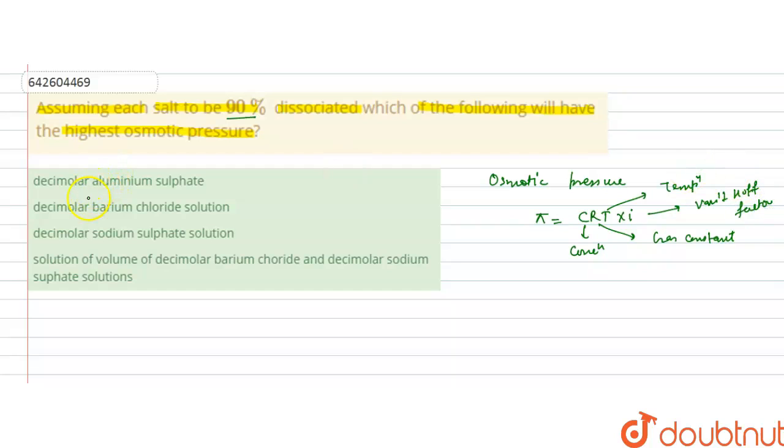We are given decimolar solutions of every option. This means concentration is the same, and they must be at the same temperature. R is the gas constant. Therefore, π is proportional to the value of I, the van't Hoff factor.